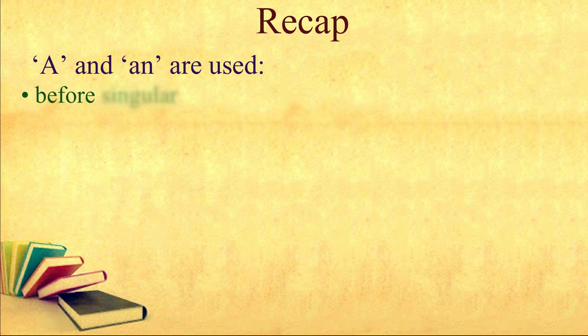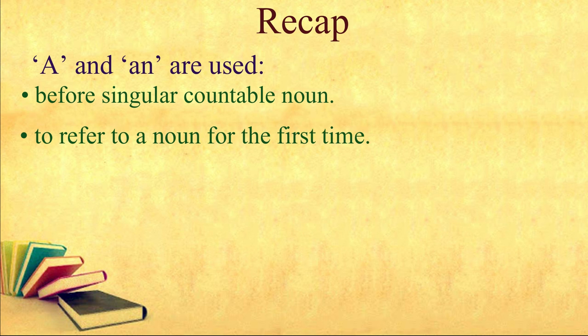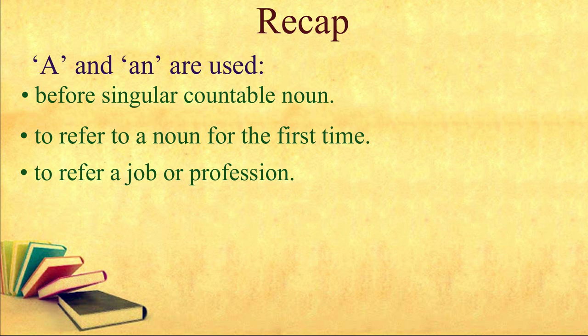Let us do a quick recap. A and an are used before singular countable nouns, to refer to a noun for the first time, to refer to a job or profession, and to refer to the number one and per.